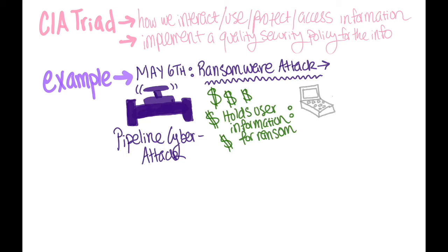A ransom is then demanded to actually provide this access. Ransomware is often designed to spread across the network and target database and file servers, and can thus run quickly and paralyze an entire organization.